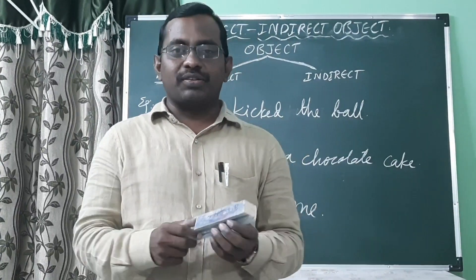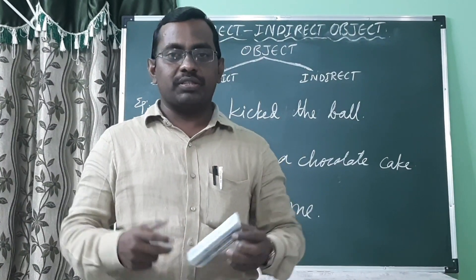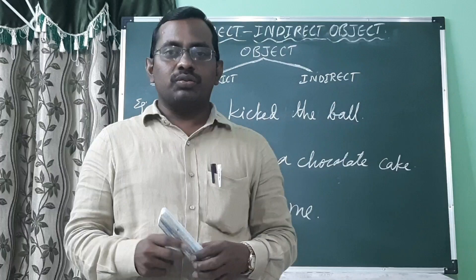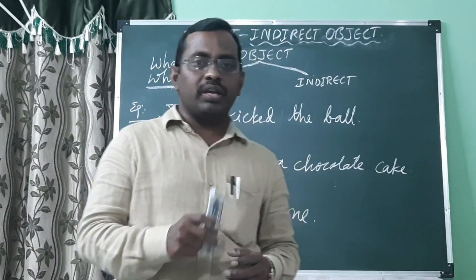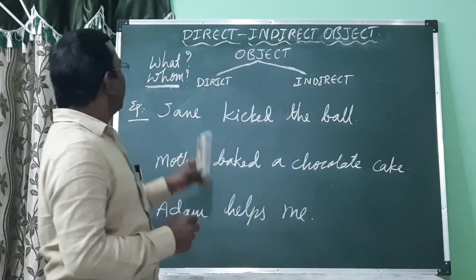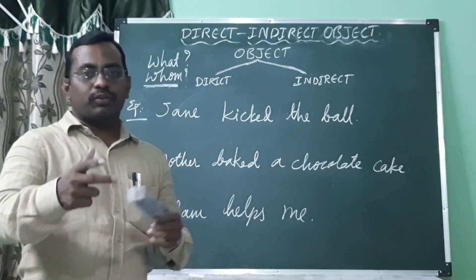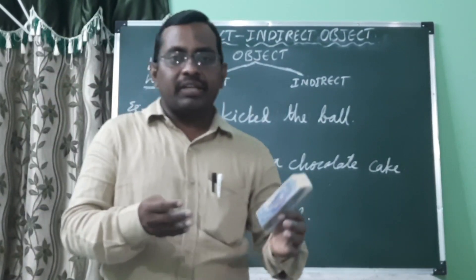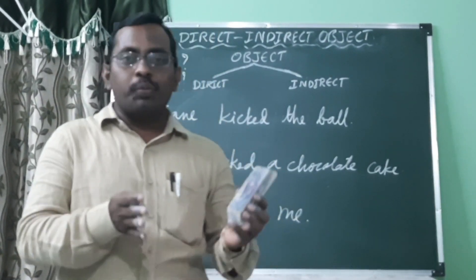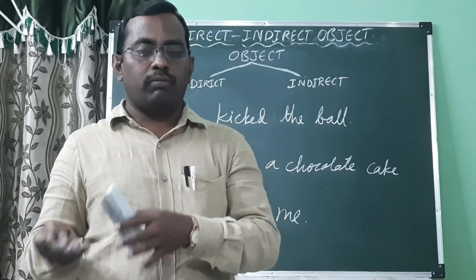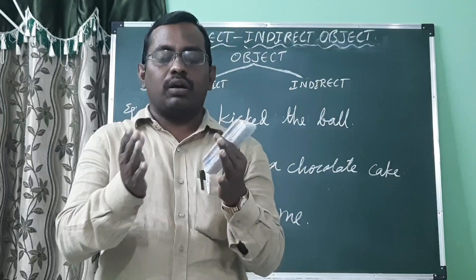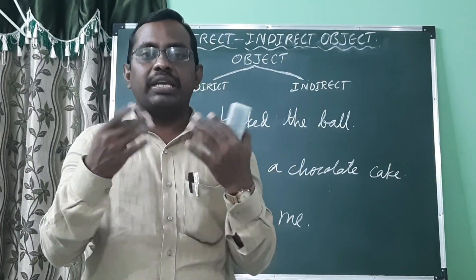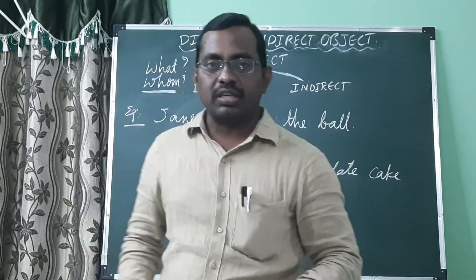Hi everyone, I am Verma, welcome back to our YouTube channel Verma's Eureka Experts. Through our channel we discuss some grammar topics. Today we discuss what is a direct object. A direct object always follows a transitive verb — without a direct object, the meaning of that verb is incomplete. Let us see some examples.